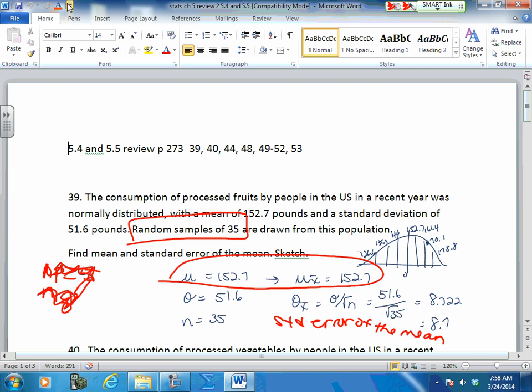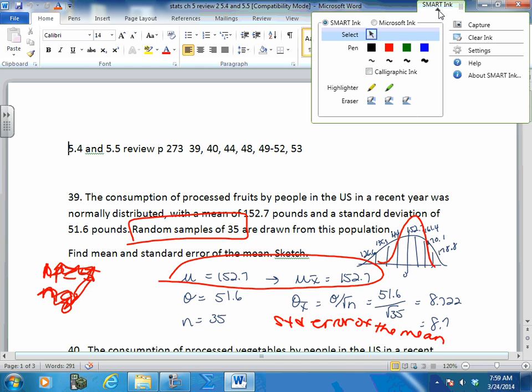Remember, what did it do to this curve? When we divided your standard deviation by the square root of N, what happens to your curve? It gets narrower. It pushes it in. You get a narrower curve. Now you don't have this much room for error in here because you're using a sample.